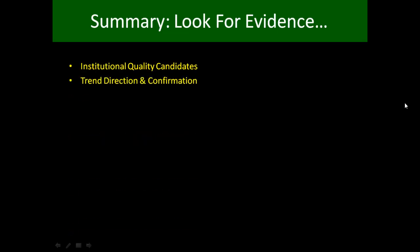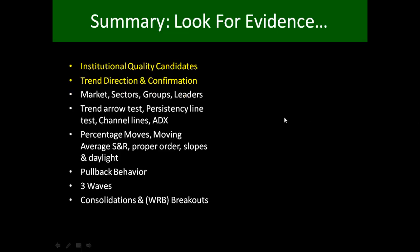When we look at a chart, we want to look at it like we're detectives or lawyers — we're trying to make a case as to whether it's strong or whether it's weak. The first thing we do is start with the institutional quality candidates, then we focus in on the trend direction, looking for confirmation that the trend is going to continue or signs that the trend is weakening and might be changing. We'd use a top-down approach and use very simple tools like an arrow test, a persistency line, a channel line — none of this is fancy, but it's effective and that's what counts. We look at volume — volume is a great confirmation tool.